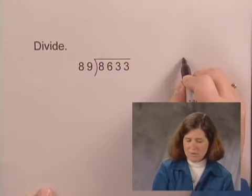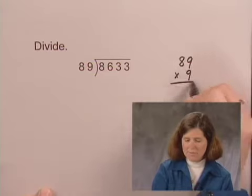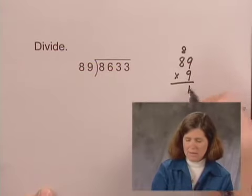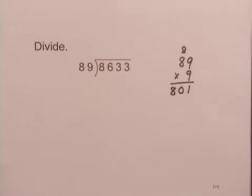Now somewhere over to the side, we multiply 89 times 9, and we get 801. And that is less than 863. So we will try 9 times.